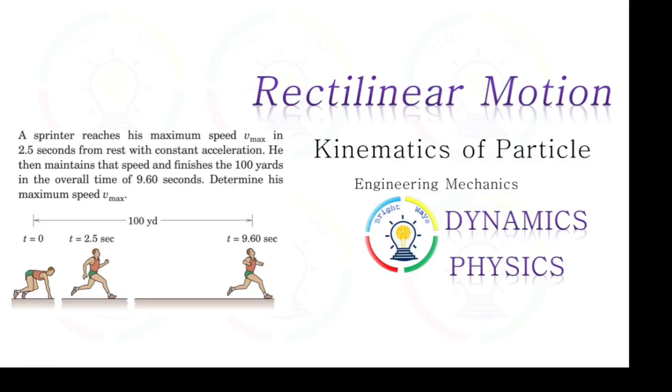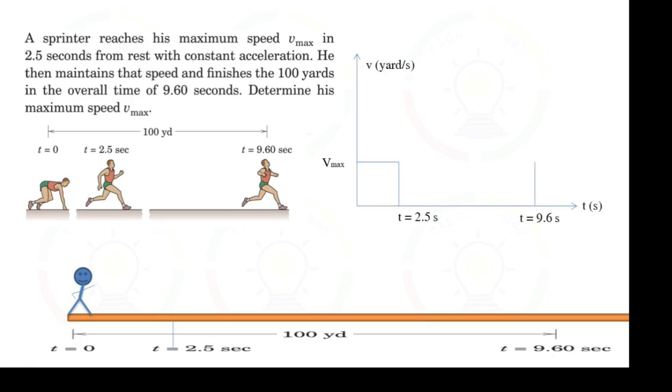Okay guys, today we'll discuss rectilinear motion with an illustrated example. A sprinter reaches his maximum speed v_max in 2.5 seconds from rest with constant acceleration. He then maintains that speed and finishes the 100 yards in the overall time of 9.6 seconds. Determine his maximum speed v_max.